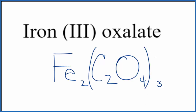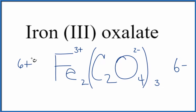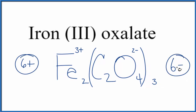This gives us the formula for iron(III) oxalate: Fe₂(C₂O₄)₃. Let's check our work — iron has a 3+ charge, and the oxalate ion has a 2− charge. Three times 2− is 6−, and two times 3+ is 6+, so the net charge is zero. This is the correct formula.